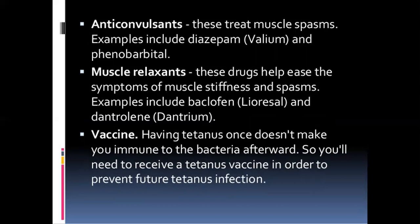Patients who are allergic to penicillin or metronidazole may be given tetracycline instead. Anticonvulsants treat muscle spasms — examples include Diazepam and Phenobarbital. Muscle relaxants help ease the symptoms of muscle stiffness and spasms — examples include Baclofen and Dantrolene.